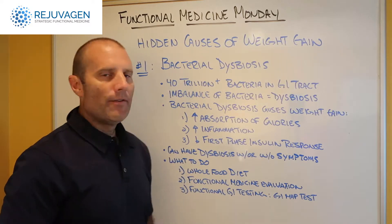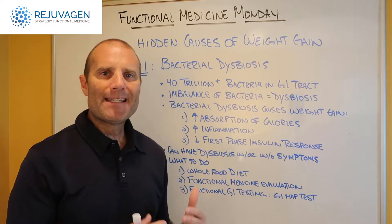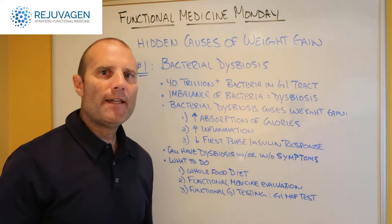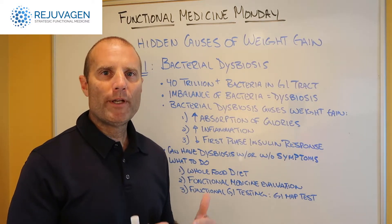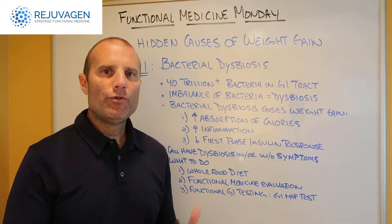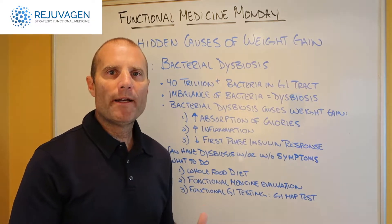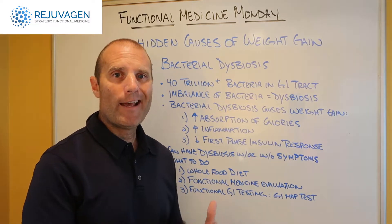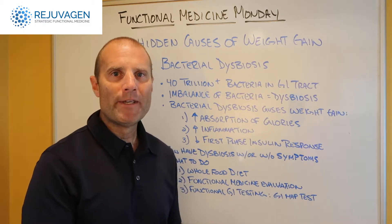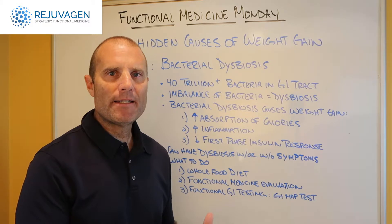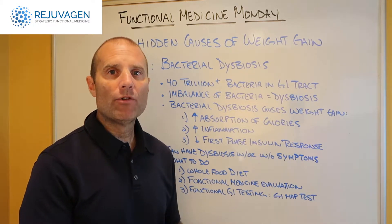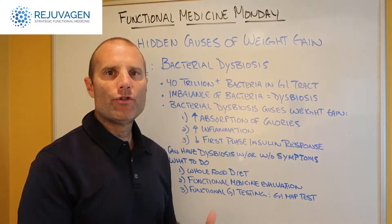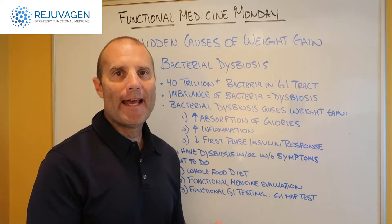The third is that when you have bacterial dysbiosis, this can lead to a loss of what's called your first-phase insulin response. The first-phase insulin response is key to maintaining appropriate blood sugar levels. If you lose your first-phase insulin response, you wind up storing more of your food glucose — the food that's converted to glucose and absorbed into the bloodstream. That glucose doesn't get into the muscle tissues where it can be utilized efficiently for energy. Instead, that excess glucose goes to production and storage in the fat cells.